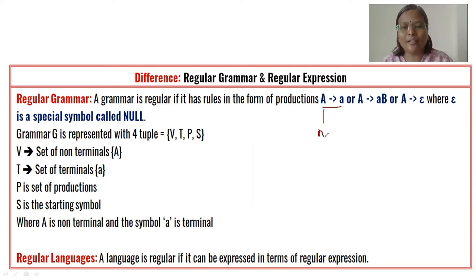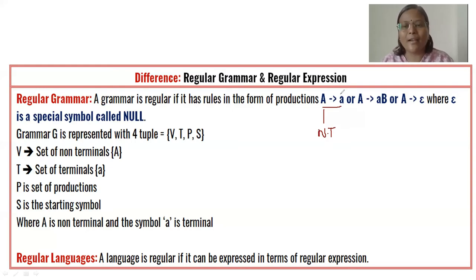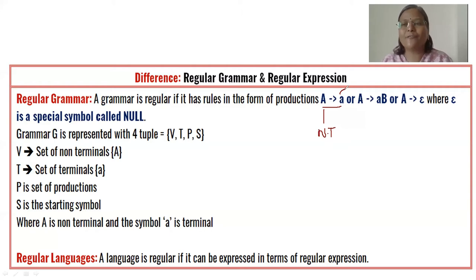Non-terminals in the world of compiler design are always in the form of sentence case or title case — every letter of the given word should start with uppercase. In this example, 'A' is uppercase, so it is treated as a non-terminal. The symbol small 'a' is lowercase. All lowercase letters and symbols like alpha, beta, gamma, plus, minus, and digits are treated as terminals.